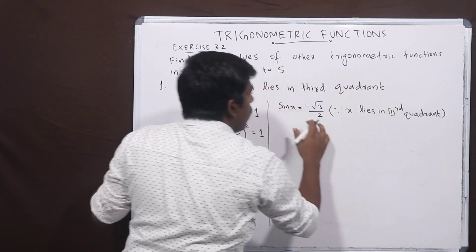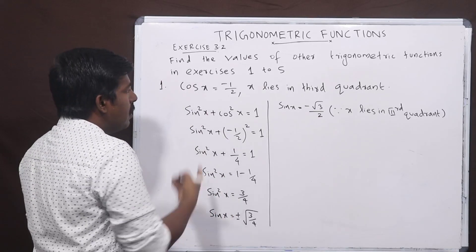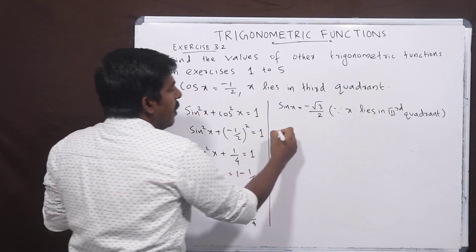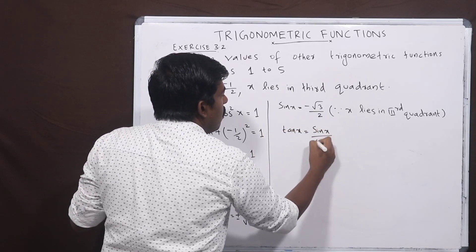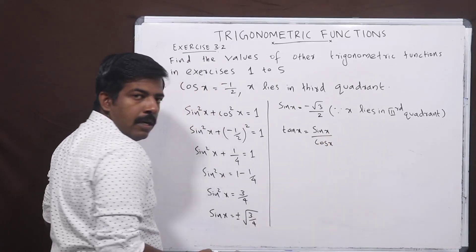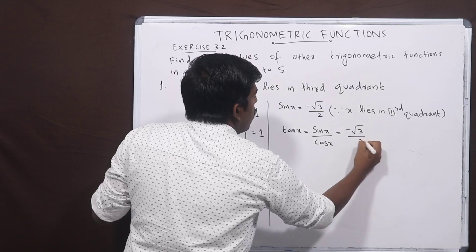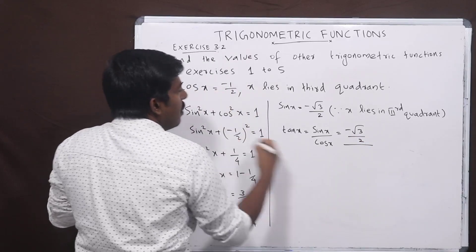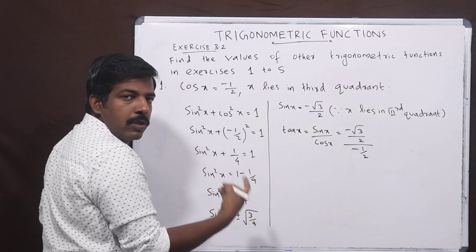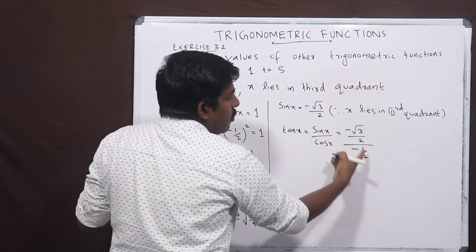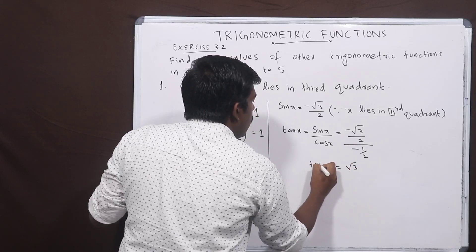Now we have sin x and cos x. For tan x, tan x equals sin x divided by cos x. We substitute negative root 3 by 2 divided by minus 1 by 2. The negatives cancel to give positive, and the 2 cancels, so tan x equals root 3.